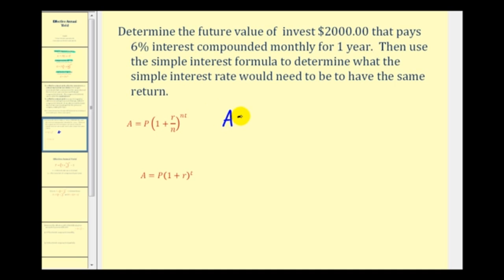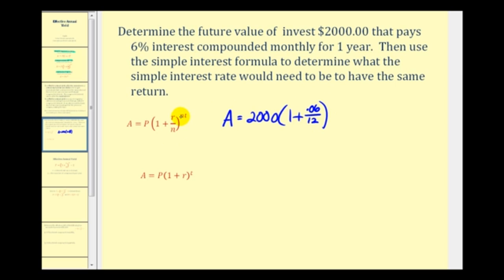The amount after one year is going to be equal to the principal, which is $2,000, times the quantity one plus the rate expressed as a decimal — so 6% would be .06 — divided by N, the number of compounds per year. It's paid monthly, so N would be 12. We raise this to the power of N times T, where N is 12 and the time in years is one year.